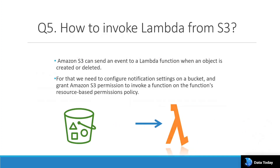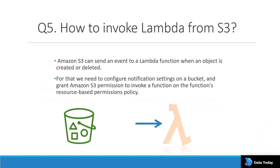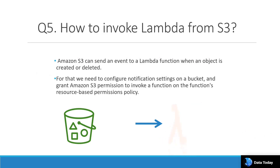Another very important question is: how do you invoke Lambda from S3? S3 has multiple triggers like put, delete, and create. S3 can send an event to a Lambda function when an object is created or deleted using a put event. For this, you need to configure notification settings on the bucket.